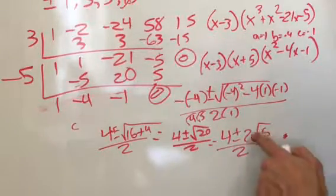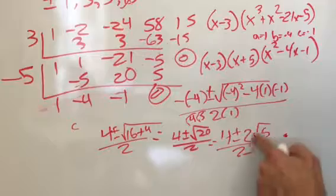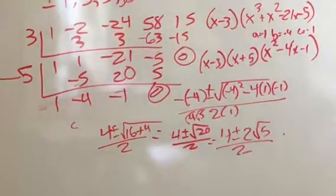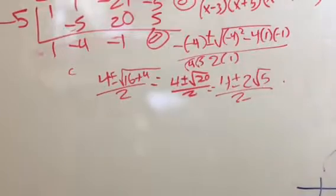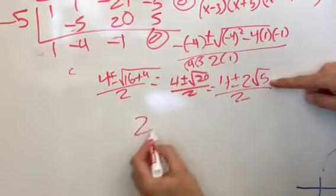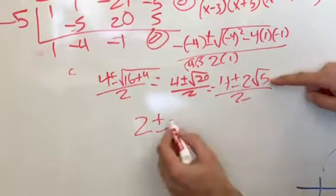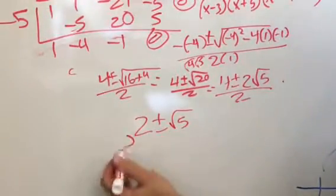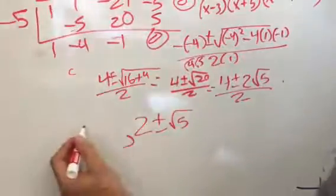And, last step, I'm almost done. All of these are divisible by 2, so I'm going to divide these by 2. So, I will get this divided by 2 is 2, plus or minus 2 divided by 2 is 1, root 5. So, notice that's 2 roots. 2 plus root 5, 2 minus root 5. Then, I also have the 2 that I already found. 3 and negative 5. There's my zeros.